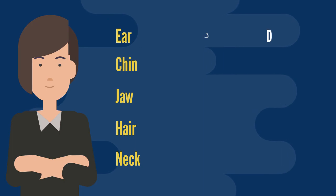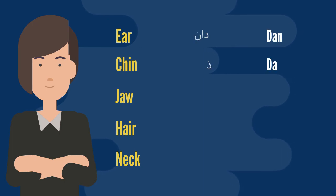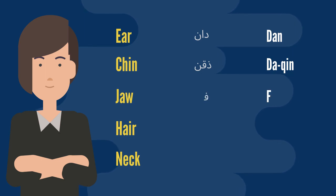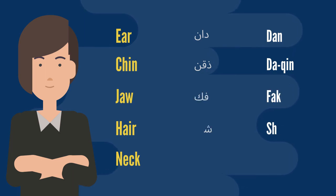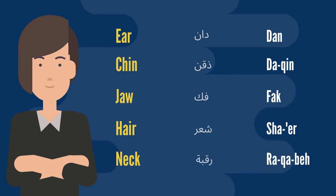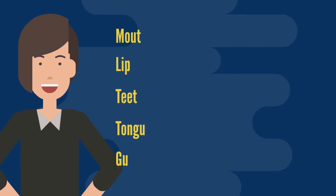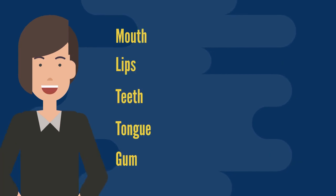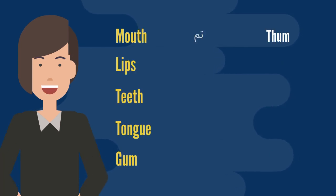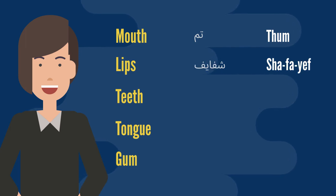Ear — dān. Chin — dān. Jaw — fāk. Hair — shār. Neck — rābē. Mouth — tum. Lips — shafāyif.